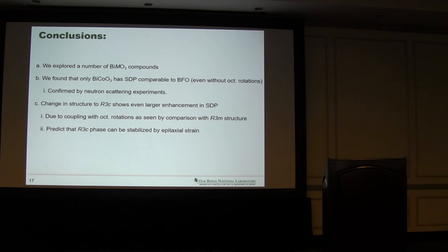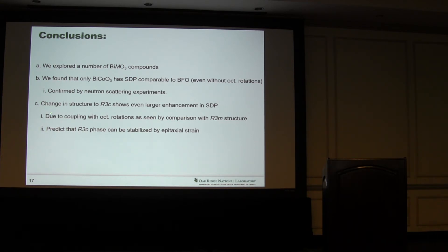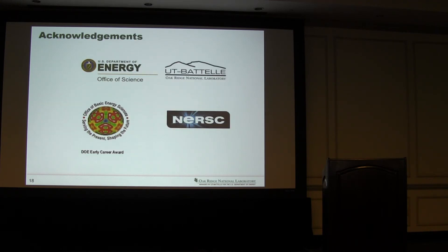In conclusion, we explored some bismuth transition metal oxide compounds to identify high spin-driven polarization. We found that bismuth cobalt oxide has comparable spin-driven polarization with BFO without even having octahedral rotation, which was confirmed by neutron scattering, though not yet with quantitative accuracy. Also, changing the structure to R3C phase even further enhanced the spin-driven polarization, which is due to coupling with octahedral rotation — seen by comparison of R3C and R3M phases. Finally, we predict that the R3C phase can be stabilized by epitaxial strain. I'd like to acknowledge DOE, OPS, SNL, Merck, and Oliver Cooper. I'd like to acknowledge our career award. Thank you.